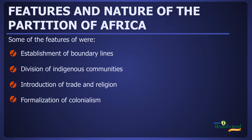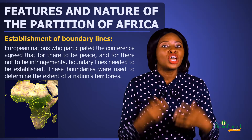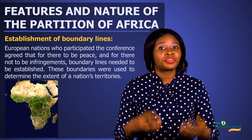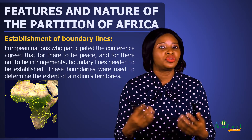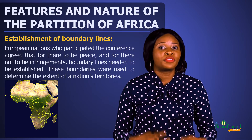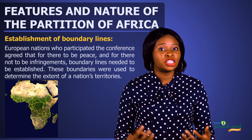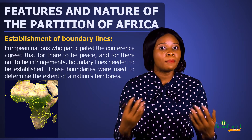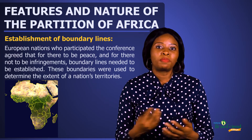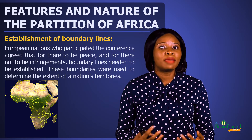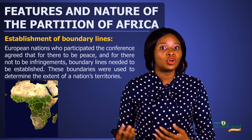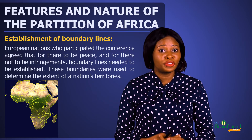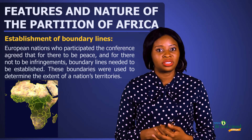Let's look at these features one after the other. During the conference, it was agreed amongst the 13 European nations and the United States of America that to exist peacefully, they would have to establish boundary lines amongst themselves. These boundary lines would help them know the extent of a particular nation's territory so as not to infringe on each other's territories.